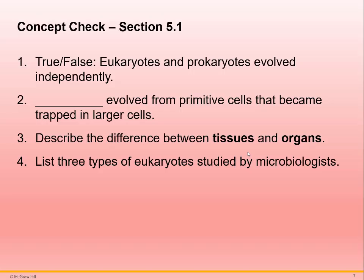The first concept check questions: True or false — eukaryotes and prokaryotes evolved independently. Then, blank evolved from primitive cells that became trapped in larger cells. Describe the difference between tissues and organs. And list three types of eukaryotes studied by microbiologists.